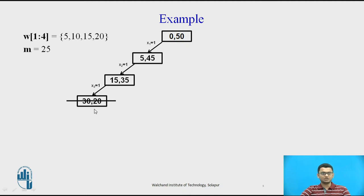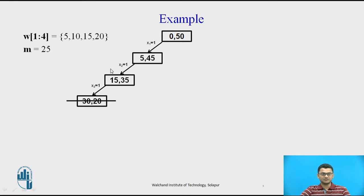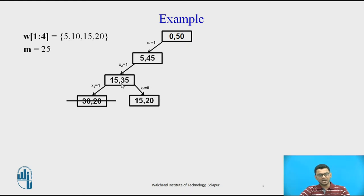Since the value of the subset is greater than 25, we backtrack and do not include the third weight. Setting x3 equals 0 means we exclude the third weight, so the subset value remains 15 and we reduce the third weight value of 15 from 35, giving a remaining value of 20. The node becomes 15 comma 20.